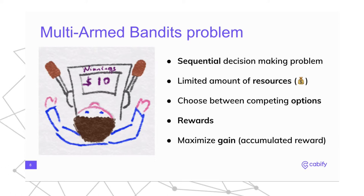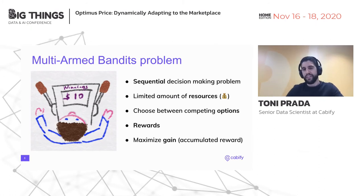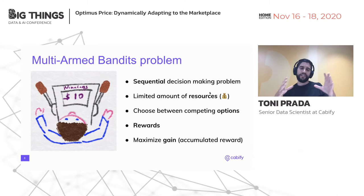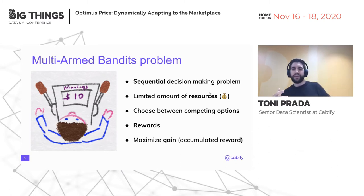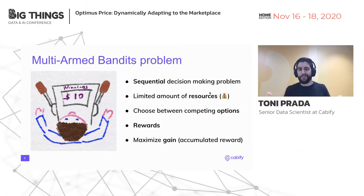What we have here is a sequential decision-making problem. Sequential, as you play coin by coin and can think between rounds. You have a limited amount of resources — the coins you can play with. You have to choose between competing options — the two arms. You know one will give more rewards than the other, and your objective is to maximize gain in the long run, i.e., the accumulated reward.